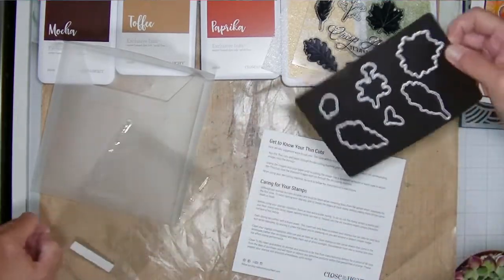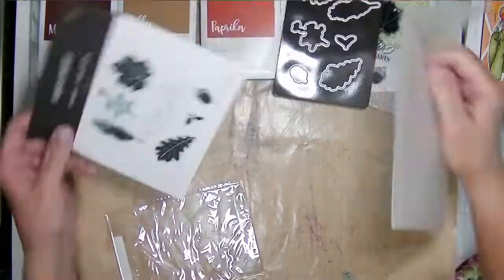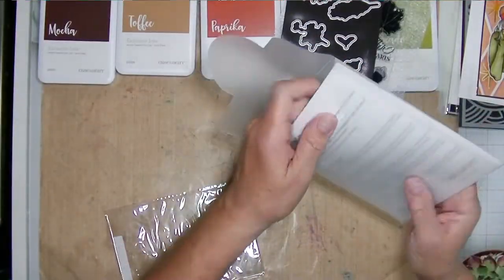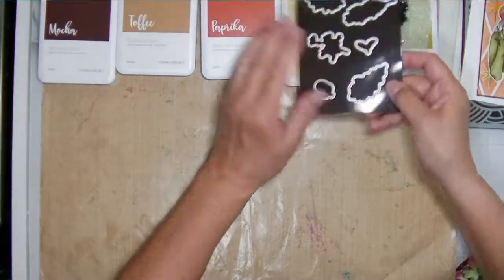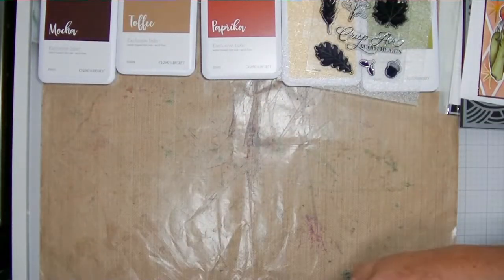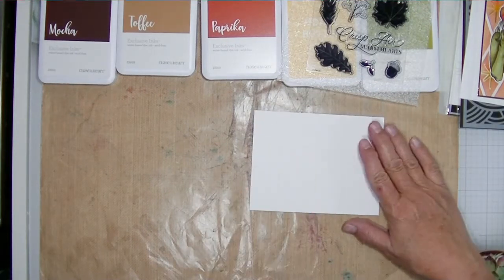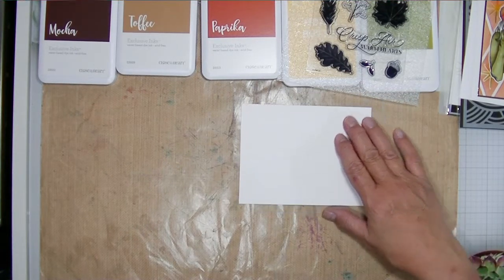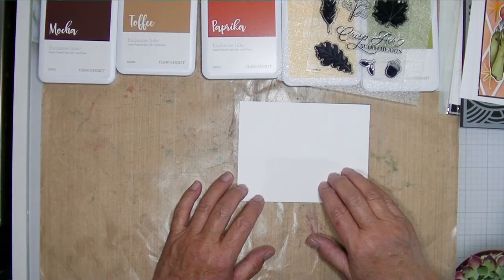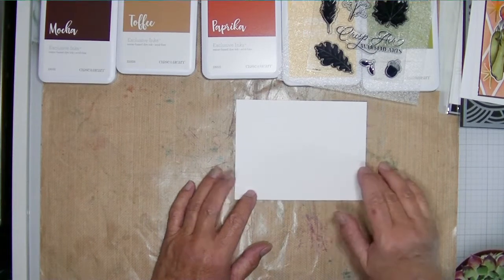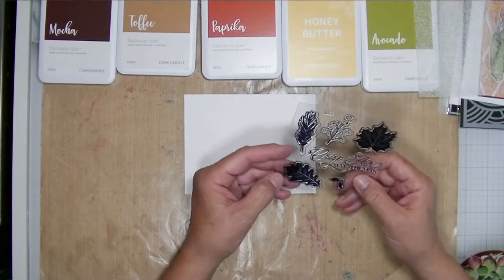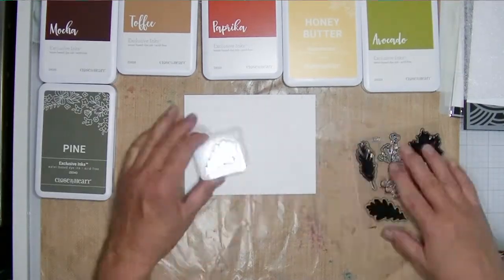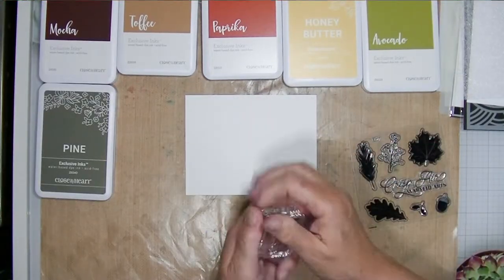These stamps and dies come beautifully packaged from Close to My Heart. I love that they include the dies on a magnet sheet. I think that is a great thing for them to do. They also include a piece of foam that you can put under your card stock and stamp on the foam to get really good images. And you can see the ink colors I'm using. I did pull out Pine and I'll pull out another one called Seabrook.